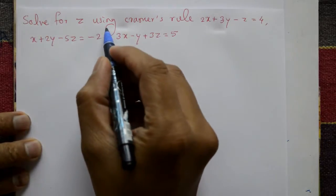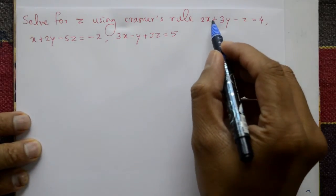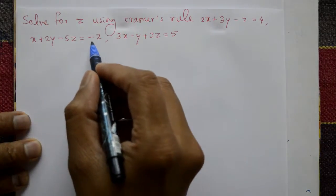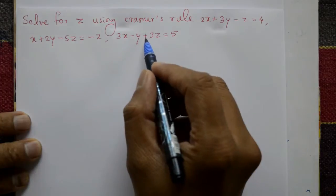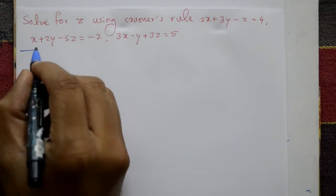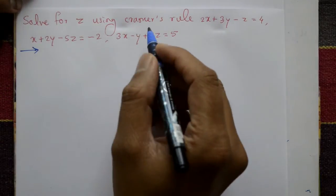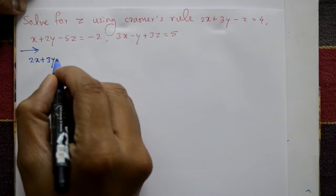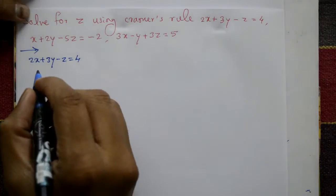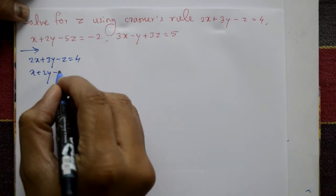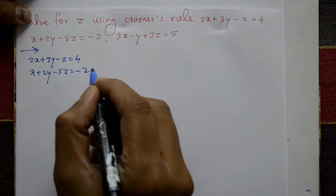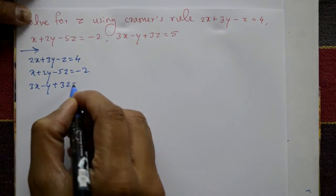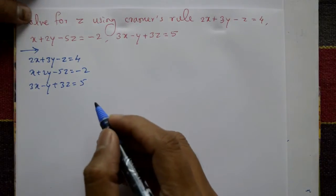Solve for z using Cramer's rule. The system of equations is: 2x plus 3y minus z is equal to 4, x plus 2y minus 5z is equal to minus 2, and 3x minus y plus 3z is equal to 5. Write the equations once again: 2x plus 3y minus z equals 4, x plus 2y minus 5z equals minus 2, and 3x minus y plus 3z equals 5.